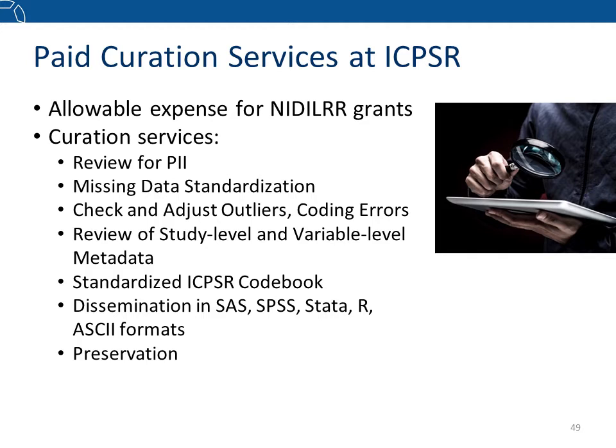ICPSR typically estimates a single fee that may cover a review of the data for personally identifiable information and mitigation of this information to ensure the dataset is de-identified, standardization of missing data codes, review and adjustments for outliers or data coding errors, review and enhancements to information about your study and its variables, development of a standardized enhanced codebook, dissemination of statistical data in multiple formats to secondary users, and steps to mitigate data obsolescence as technology changes.